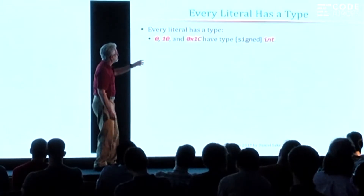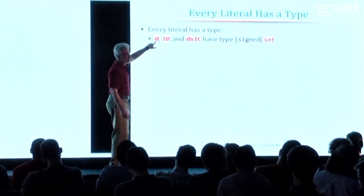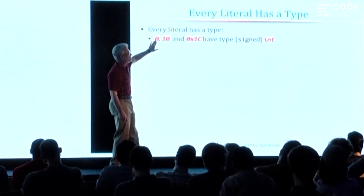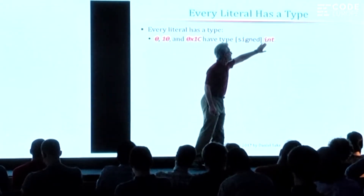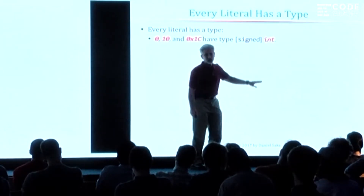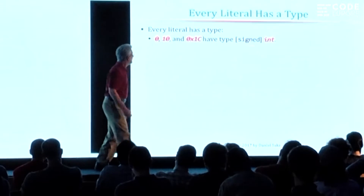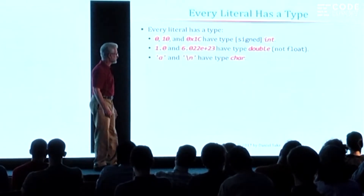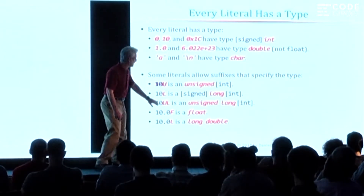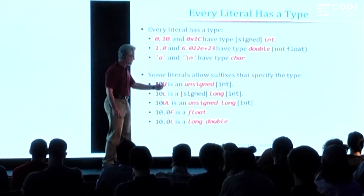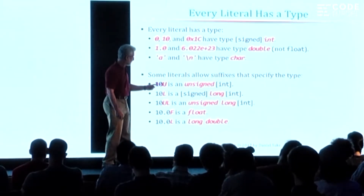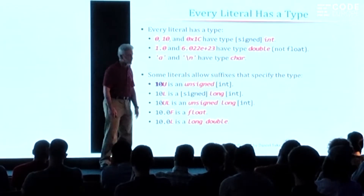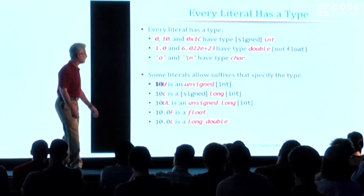Now it starts by understanding that even a literal like 0 has a type — decimal integer constants have a type, and it is not just int, it is a signed int. Things like 1.0 have type double. Those are character constants. But you can even control exactly what type it is — for example, you can turn 10 into an unsigned by putting a U, or you can turn 10 into a long int by putting an L. So every constant has a type and you have some control over exactly which one it is.